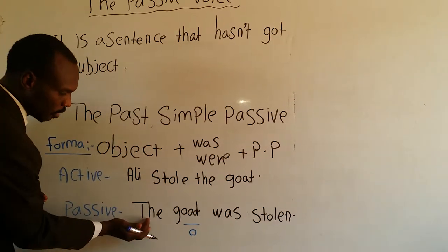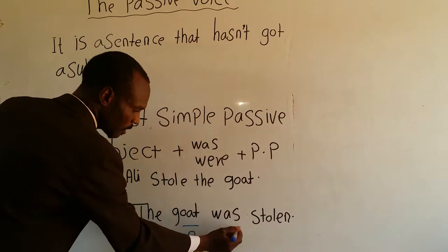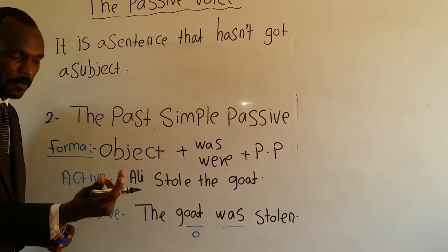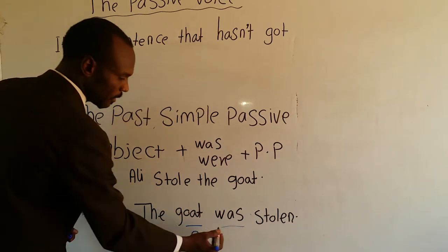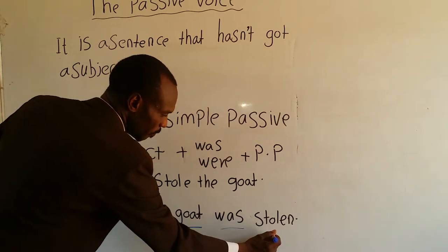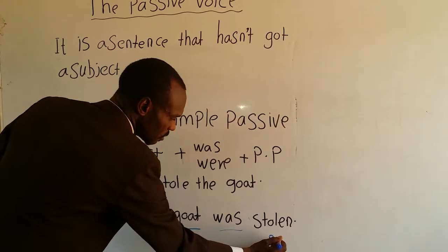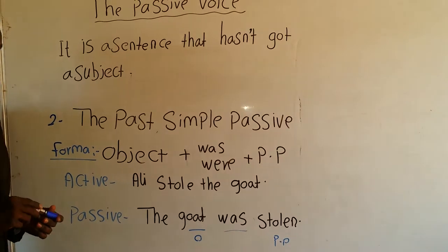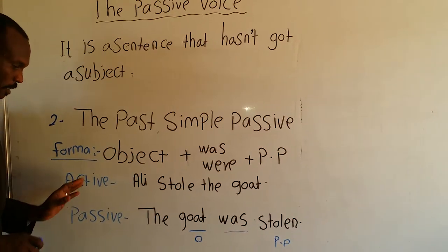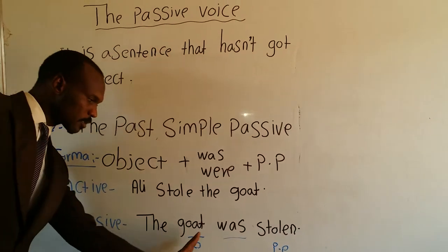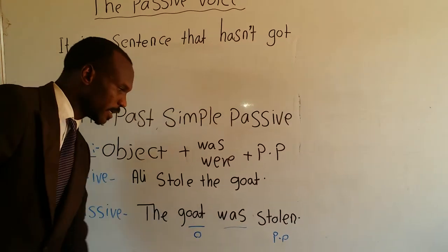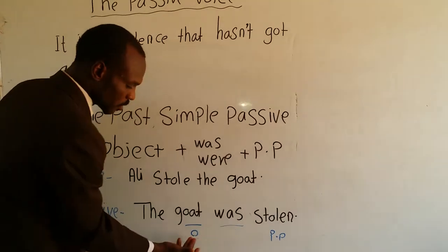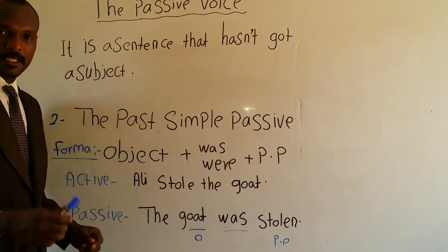Active sentence: 'Ali stole the goat.' This action is happening in the past. We want to change it into the passive voice. We say: 'The goat' — because the goat is the object — 'was stolen' in the past. 'Was' because goat is singular. The passive voice: 'The goat was stolen.'